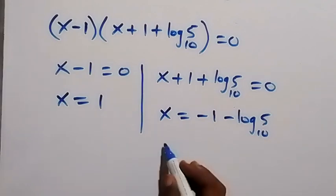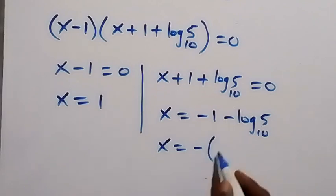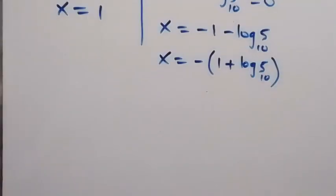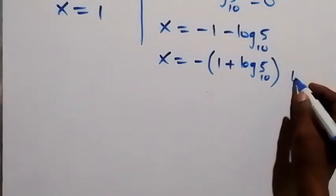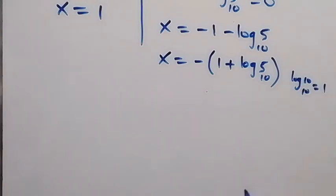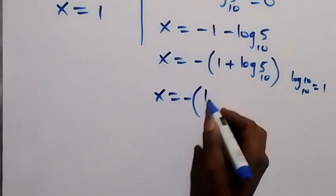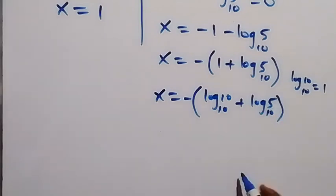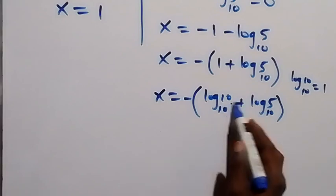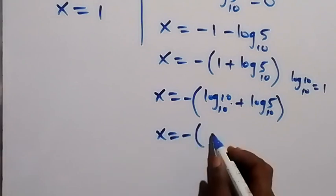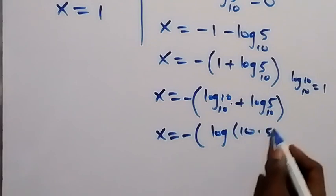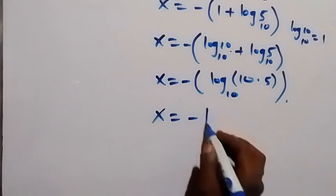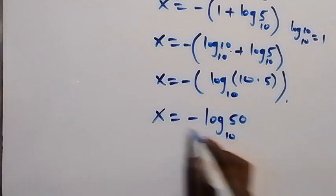We can simplify the second solution: x equals negative bracket 1 plus log 5 base 10. Since 1 can be written as log 10 base 10, this becomes x equals negative bracket log 10 base 10 plus log 5 base 10. Using the sum of logarithms rule, we multiply the arguments: x equals negative log of 10 times 5 base 10, which equals negative log 50 base 10.